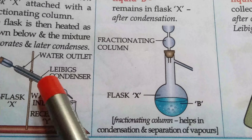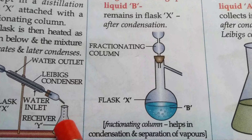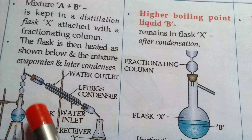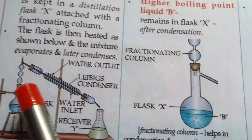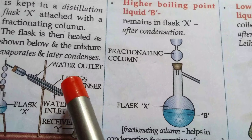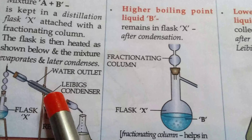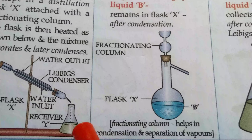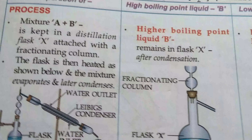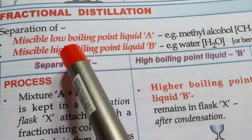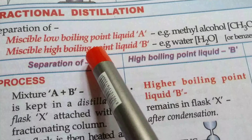The liquid with a low boiling point, after condensation, collects in receiver Y. The liquid with a higher boiling point remains in flask X. So fractional distillation is a process by which we can separate out two miscible liquids where one has a low boiling point and the other has a high boiling point.